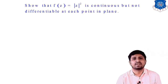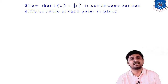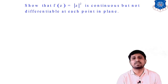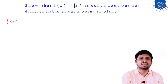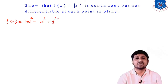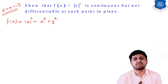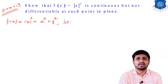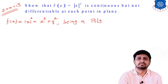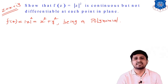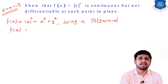Our first example on differentiability: show that f(z) = |z|² is continuous but not differentiable at each point in the plane. To prove continuity, it is quite easy because f(z) = |z|² = x² + y², taking z = x + iy. Since x² + y² is a polynomial, f(z) is continuous everywhere, as polynomial functions are continuous everywhere.